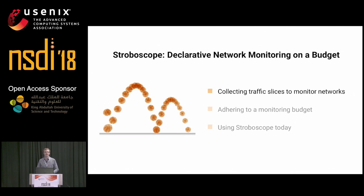Stroboscope is our solution to get visibility over individual packets in ISP networks. I'll start by introducing the new primitive we are leveraging, which we call traffic slicing.